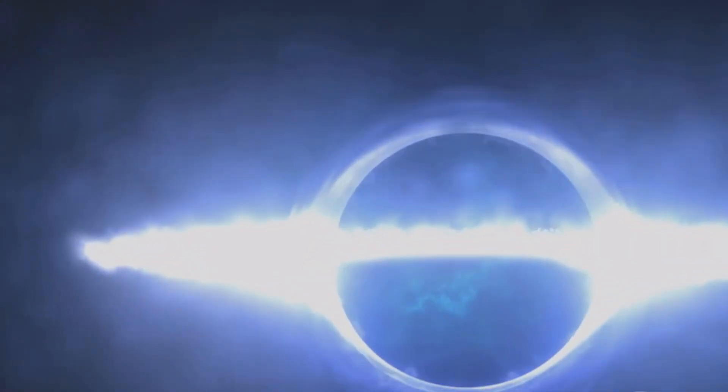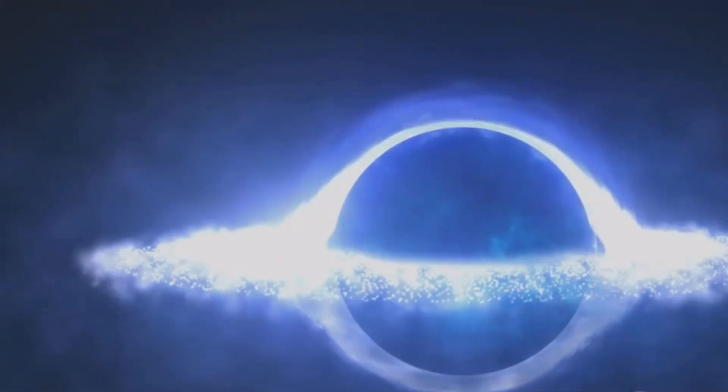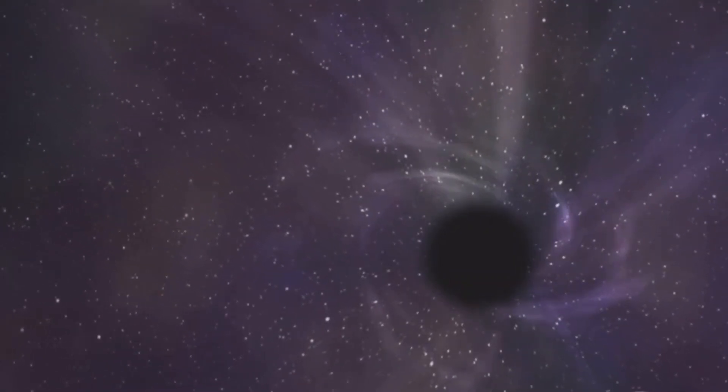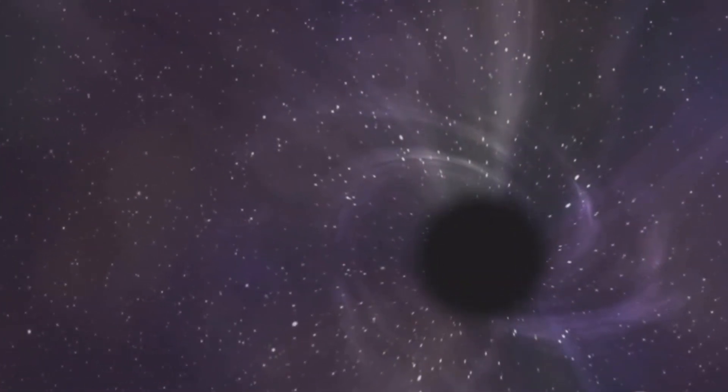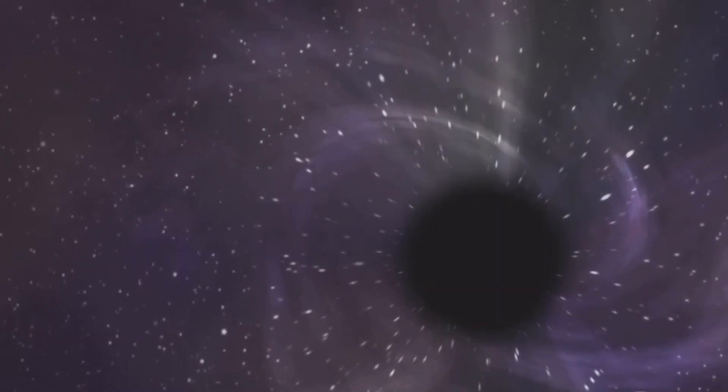Once something crosses the event horizon, there's no coming back. It is pulled inexorably towards the singularity, succumbing to the immense gravitational pull. This process can tear apart stars and planets.